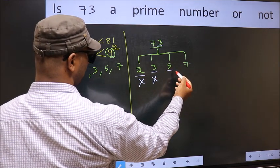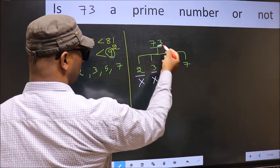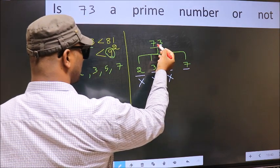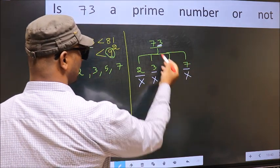Next number 5. Last digit is neither 0 nor 5. So this is not divisible by 5. Next number 7. We don't get 73 in 7 table. So this is not divisible by 7.